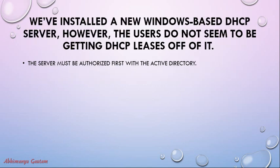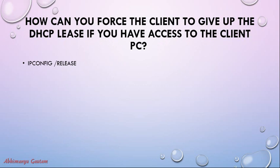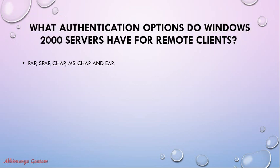Question: We installed a new Windows-based DHCP server, but users are not getting a DHCP lease. Answer: The server must be authorized first with Active Directory. To force a client to give up the DHCP lease if you have access to the client PC, use 'ipconfig /release'.